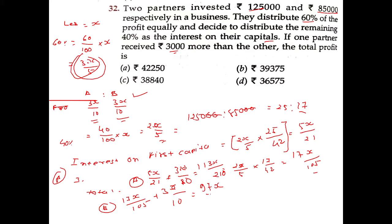Simplifying: the first partner's total comes to 9x divided by 210, and the second partner's total is calculated similarly. Since the first partner earns $3,000 more than the second partner, we set up the equation accordingly.